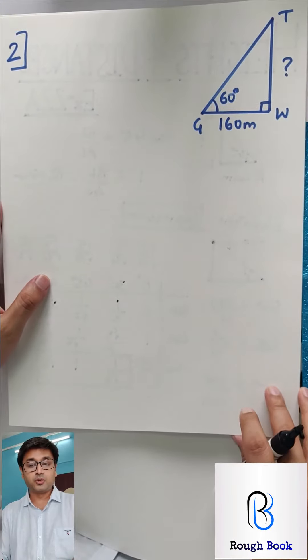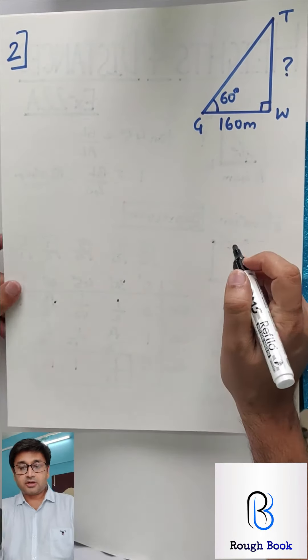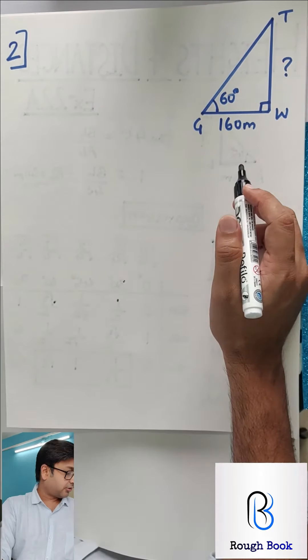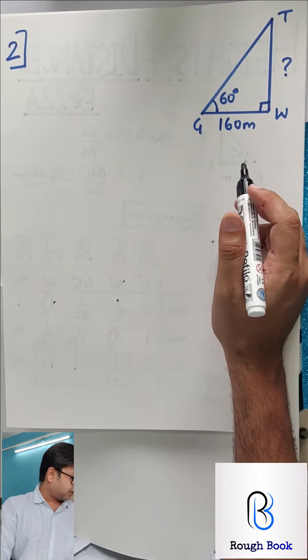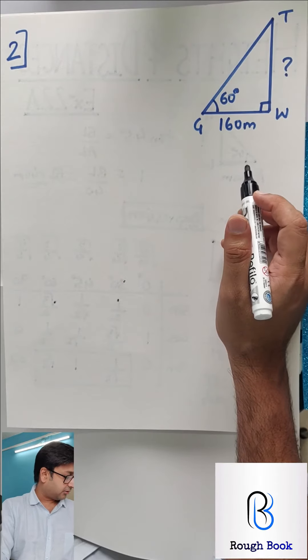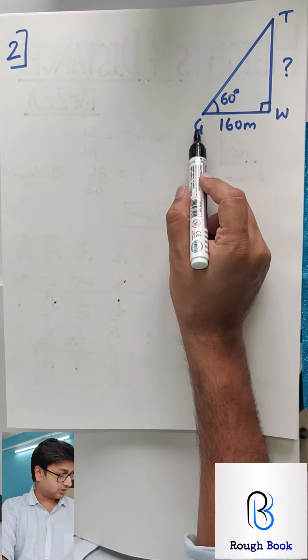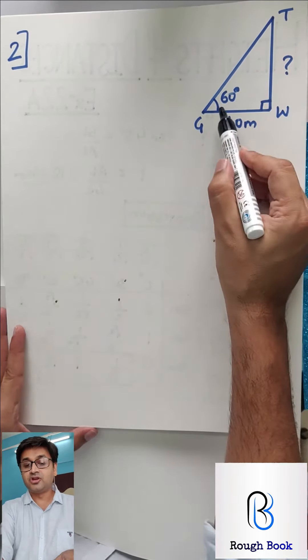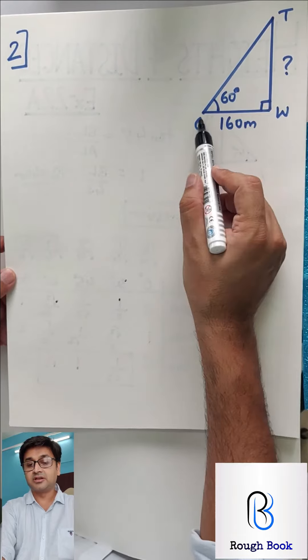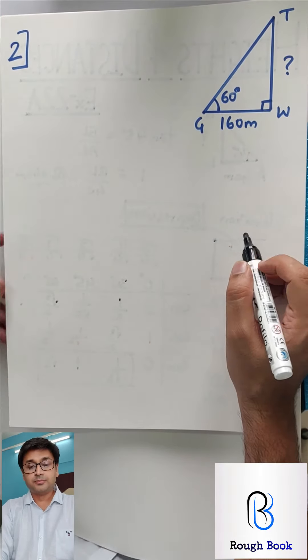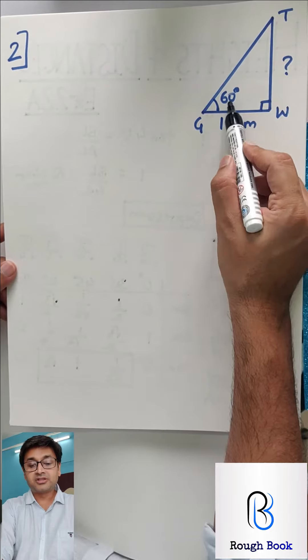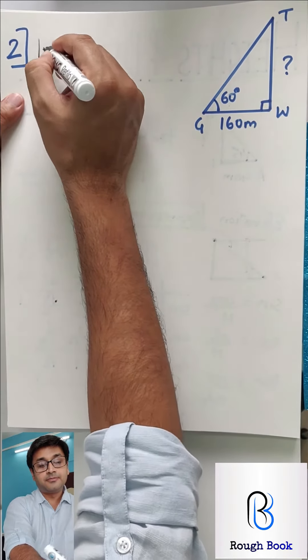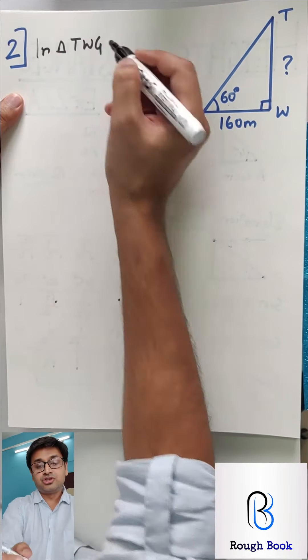Let's begin with sum number 2. The most important thing in the topic is the diagram. If a diagram goes wrong, you had it. The question reads: The angle of elevation of the top of the tower from a point on the ground at a distance of 160 meters away is found to be 60 degrees. Find the height of the tower. How simple?